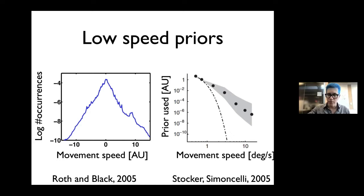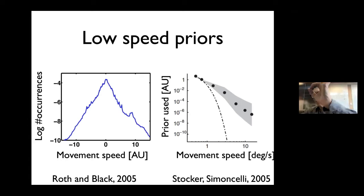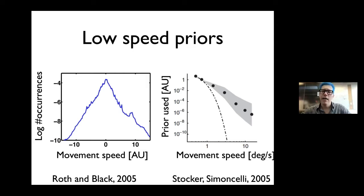So here we're just talking about prior-likelihood integration. Here we have another case where Alan Stocker measured the prior that people have about speeds of stimuli. This is a classical vision experiment — they take a little hole, grey out everything outside it, and behind that hole they put a moving stimulus. You can change how fast they move and change the contrast.